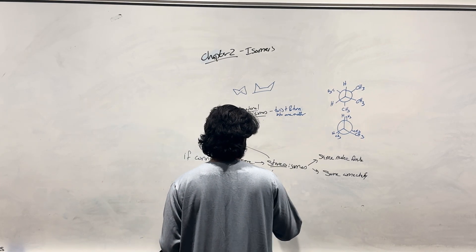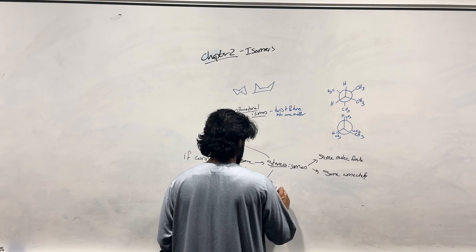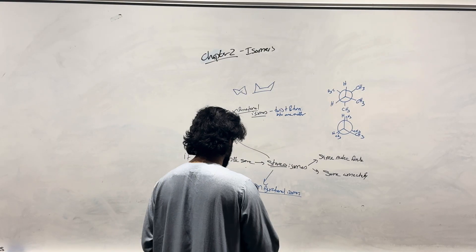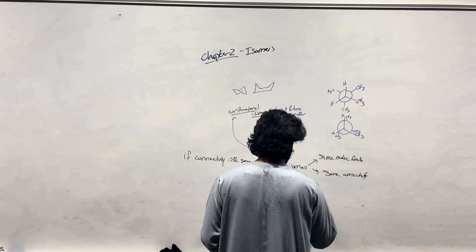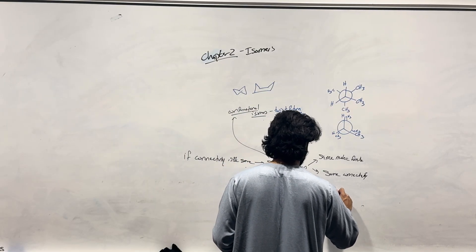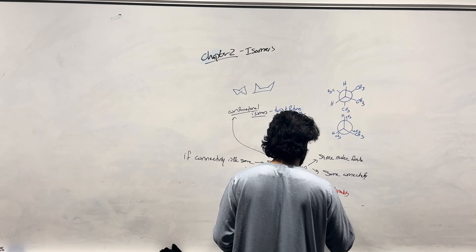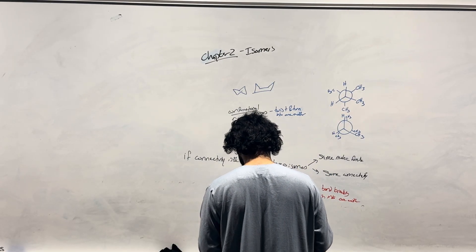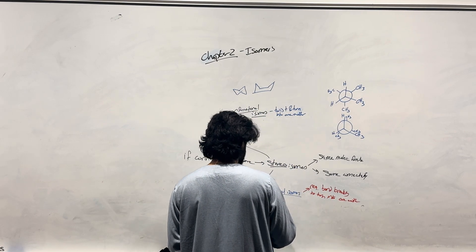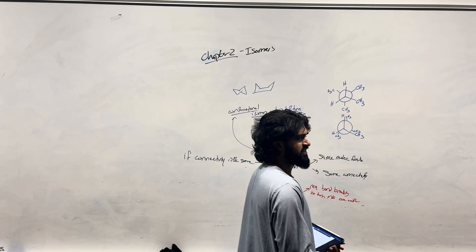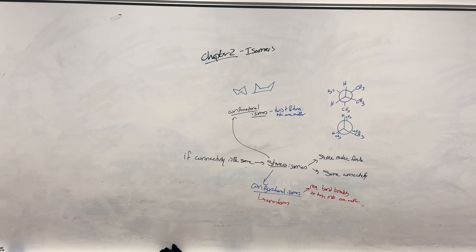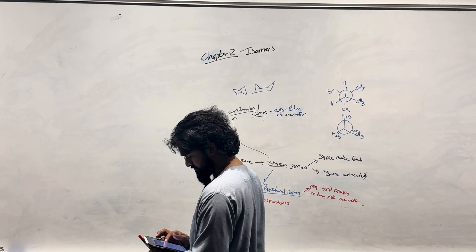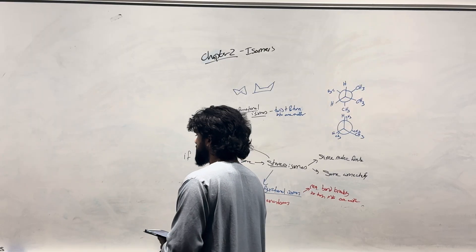Along with stereoisomers, you have configurational isomers. If conformational isomers were able to twist and turn into one another, configurational isomers require bond breaking to turn into one another. All enantiomers fall here — we talked about that in chirality. The mirror image of a chiral carbon makes that enantiomer. You need to break that bond and rearrange those atoms in order to get the same connectivity.